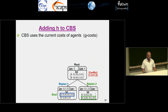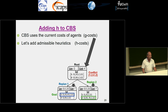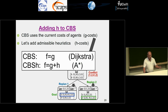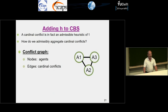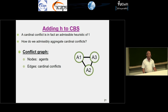Now, it looks like everyone who worked on CBS only used the G-cost of agents — the cost of a node was only the G-cost. Let's add admissible heuristics to that. We are going to use G plus H, just like A* improved upon Dijkstra's algorithm. We know H exists — let's do it for CBS. The main point is that a cardinal conflict is, in fact, an admissible heuristic of one: if I have a cardinal conflict, I know for sure that one of the agents will have to go at least one more than the current cost. Now, what if I have many cardinal conflicts? How do we admissibly aggregate cardinal conflicts?